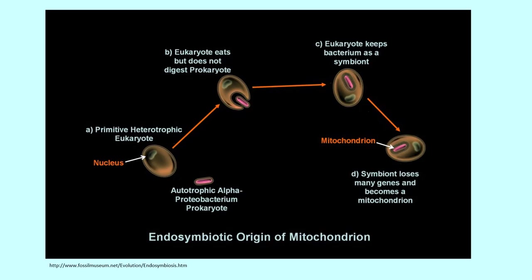This mutually beneficial relationship became permanent over time and the prokaryote thus became completely dependent on the eukaryote as it lost some of its genes needed for independent life and transferred others to the nucleus of the eukaryote. The genes of the respiratory machinery became a mitochondrion, and thus the origin of mitochondria is through an endosymbiotic process.